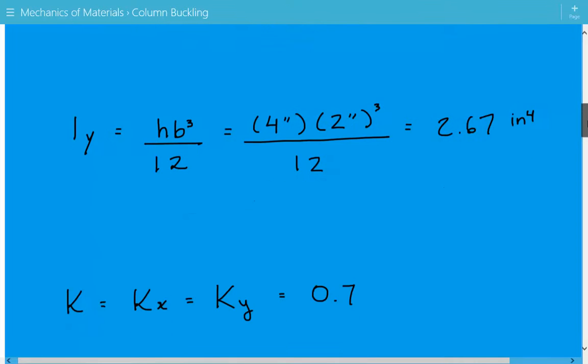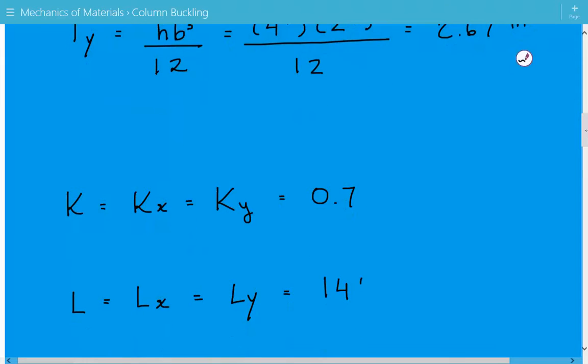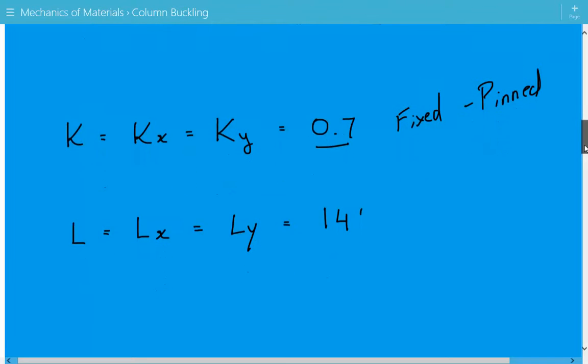The effective length factor K for both axes is equal to 0.7. This is based on the boundary condition that we have: fixed at one end and pinned at the other end. This results in the effective length factor equal to 0.7. Unbraced length for both axes is equal to 14 feet.